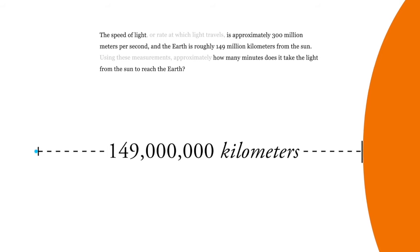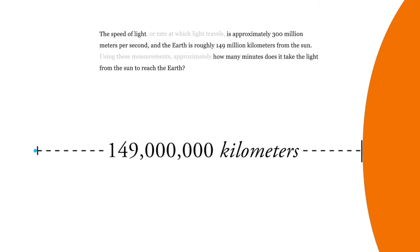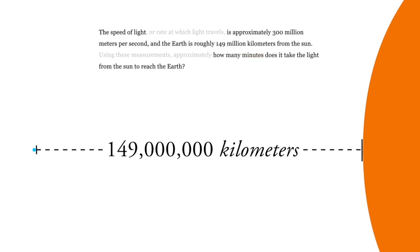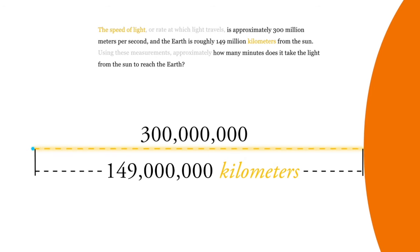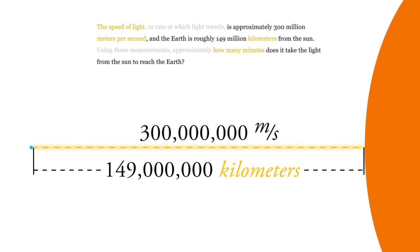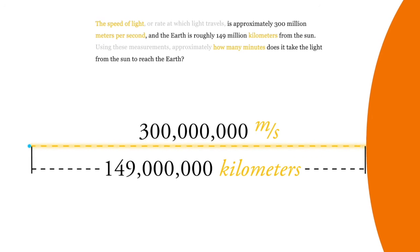So anytime this comes up, we should pay special attention to the units, because it's asking us how many minutes. So it's giving us the distance in kilometers, it's giving us the speed in meters per second, and it's asking us how many minutes, even though the speed was in units per second. So we're going to have to make some transitions.